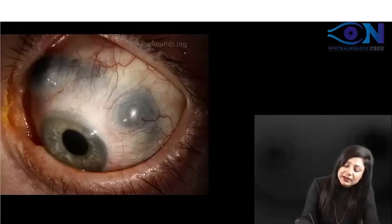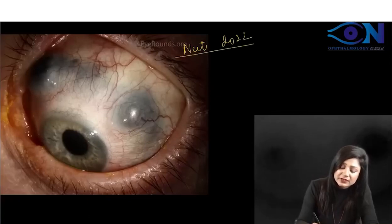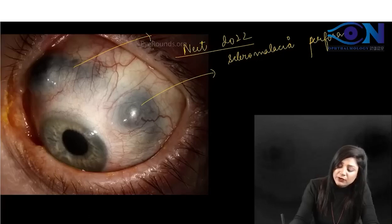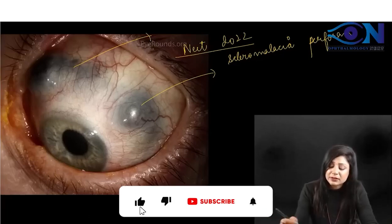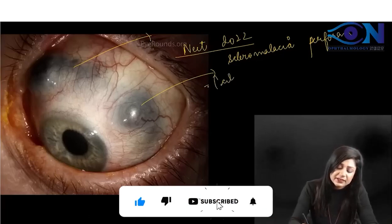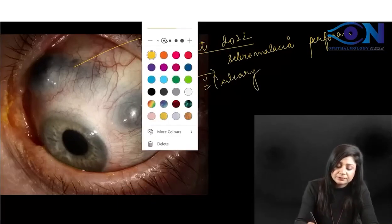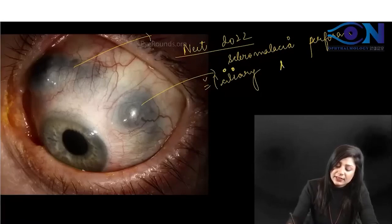This actually came in NEET 2022. You can see these blackish areas - this is scleromalacia perforans. Sometimes it mimics ciliary staphyloma, but there are key differences.